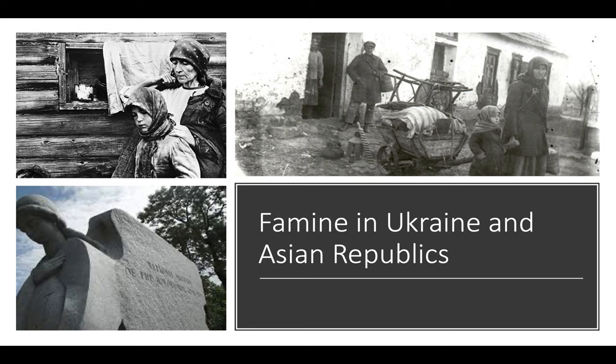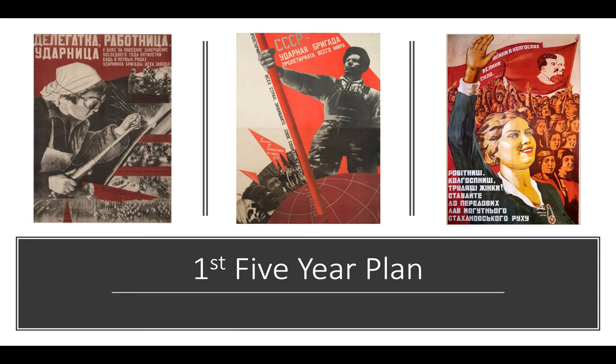The sudden collectivization mandate disrupted farming patterns. Combined with poor harvests and the confiscation of foodstuffs by the Soviet state, Ukraine, the North Caucasus region, and parts of Central Asia experienced intense famine in the early 1930s. Among those who died from starvation are about four million Ukrainians and at least one million Kazakhs, though estimates differ among historians.